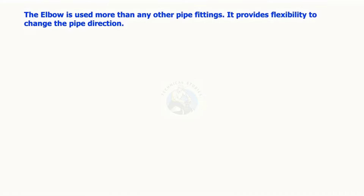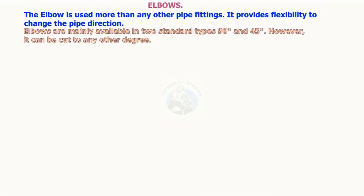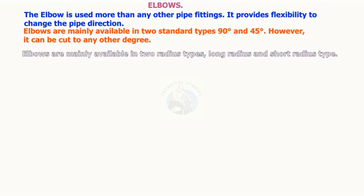The elbow is used more than any other pipe fitting. It provides flexibility to change the pipe direction. Elbows are mainly available in two standard types: 90 degrees and 45 degrees. However, it can be cut to any other degree. Elbows are mainly available in two radius types: long radius and short radius.